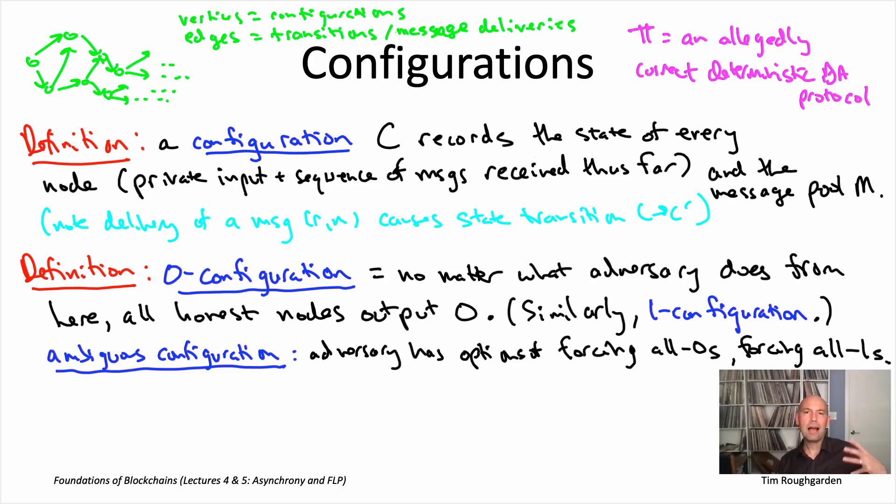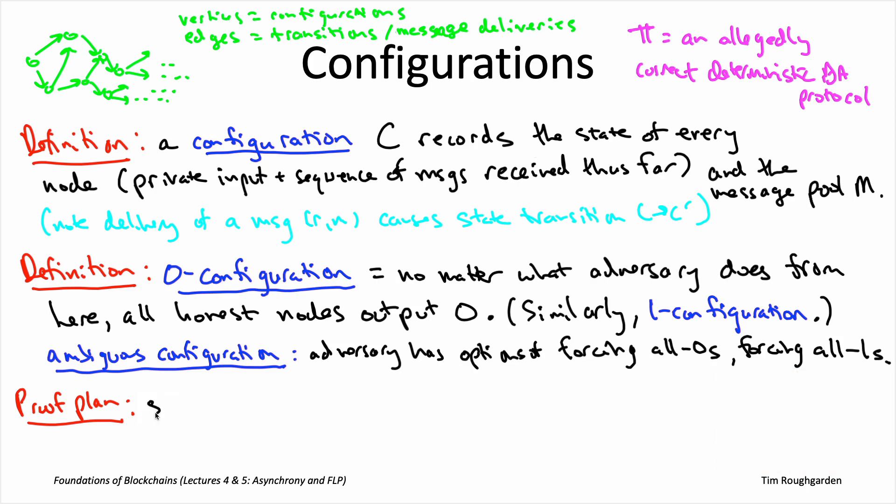So, now I can tell you about the high-level proof plan. Which again, visually think of it as we're going to be hunting for an infinite path through that big directed graph with configurations as vertices and transitions as directed edges. Specifically, the plan is to exhibit an infinite sequence of ambiguous configurations. So, in other words, you give me an allegedly correct deterministic protocol π.